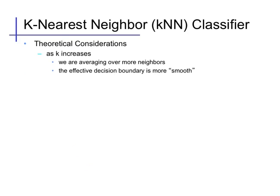A few theoretical considerations about the k nearest neighbor methods. So as I just mentioned, as k increases, the effect is that every prediction at any particular point is averaging over a larger set of neighbors. And that makes the decision boundary more smooth and simple looking.